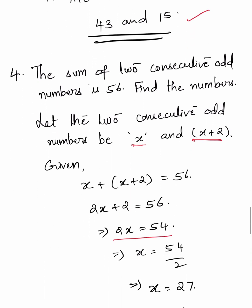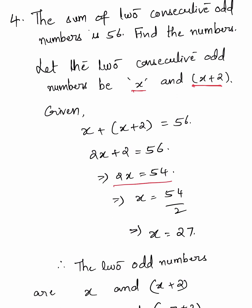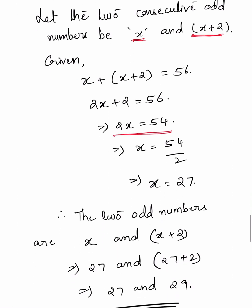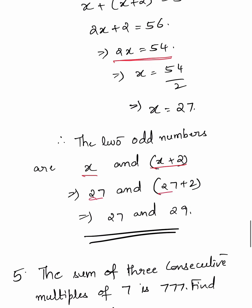The sum of two consecutive odd numbers is 56. Consecutive odd numbers always differ by 2, so let them be X and X plus 2. Given X plus X plus 2 equals 56, so 2X plus 2 equals 56, then 2X equals 54 and X equals 27. Therefore the two consecutive odd numbers are 27 and 29.